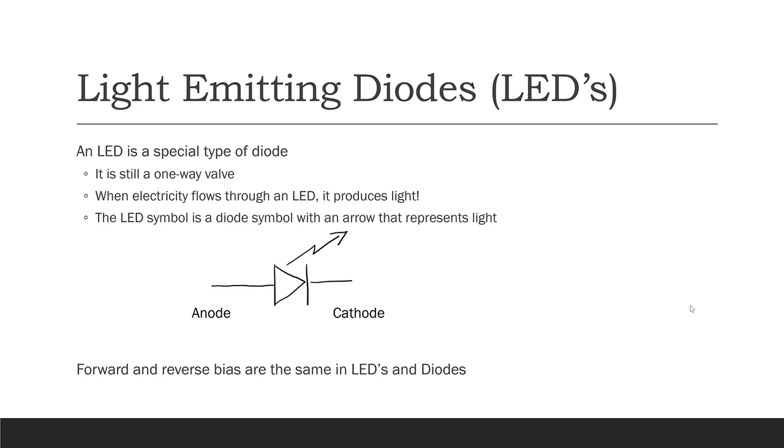Light emitting diodes are a special type of diode. It's still a one-way valve, just like all diodes, but when electricity flows through an LED, it produces light. The symbol for an LED is just like the symbol for a regular diode, except that the LED also has an arrow pointing out of it, representing light.